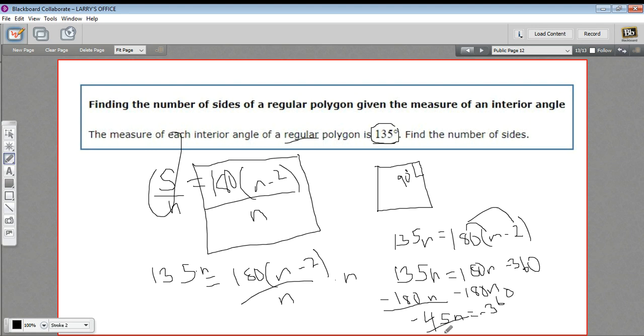And then all I need to do is divide both sides by negative 45. And I should have it. And I think when you do that, you get n equals 8. So this is an octagon. And every regular octagon is going to have an interior angle measure of 135 degrees.